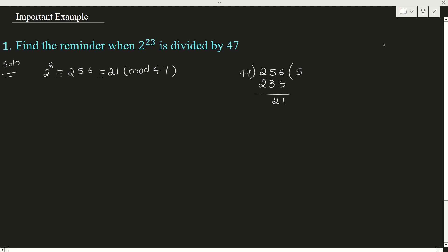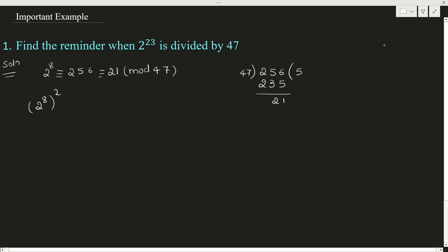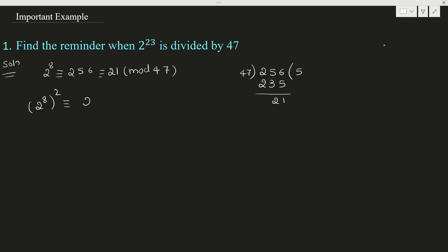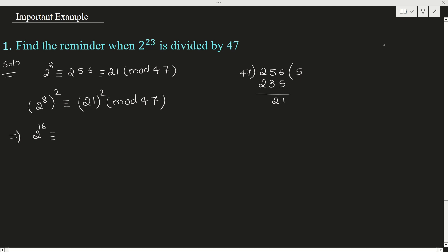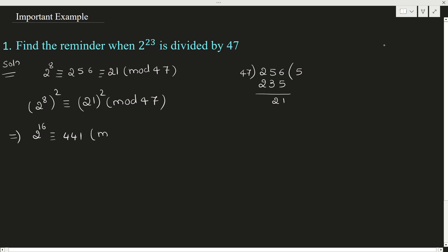We want power 23, but we have power 8. Let us square both sides. So 2 raised to 8, squared, is congruent to 21 raised to 2 mod 47. That gives us 2 raised to 16 is congruent to 441 mod 47.